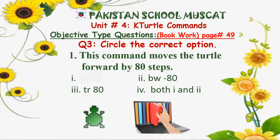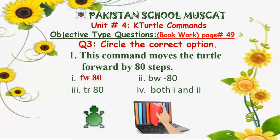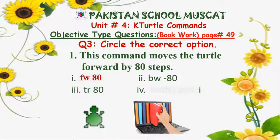The correct option is fw 80. However, if you write bw minus 80, that will also be correct, because when you add the minus key it moves forward. So if you mark both first and second as correct, that is also fine. Both fw 80 and bw minus 80 are acceptable answers.